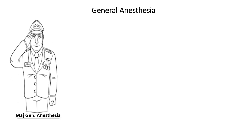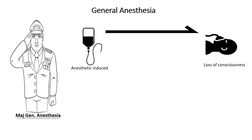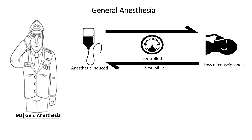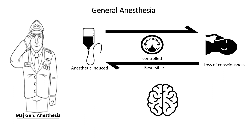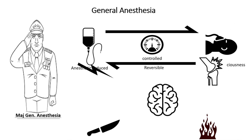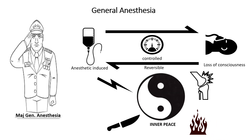General anesthesia is a drug-induced state of unconsciousness produced by a process of controlled, reversible depression of the central nervous system, in which there is a lowered sensibility to stimuli from the environment and a diminished motor response to such stimuli. General anesthetics are drugs that produce reversible loss of sensation and consciousness.